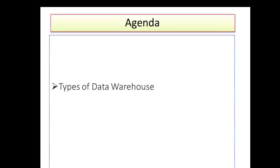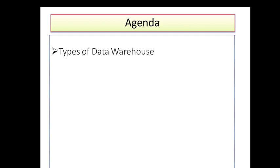Let's start Session 2. In Session 2 we'll discuss the types of data warehouse, the different types we have, then ODS versus data warehouse, and OLTP versus OLAP — both comparisons are essentially the same. OLTP is Online Transactional Processing and OLAP is Online Analytical Processing. For now just keep the term OLAP in mind; we'll discuss it in upcoming sessions.